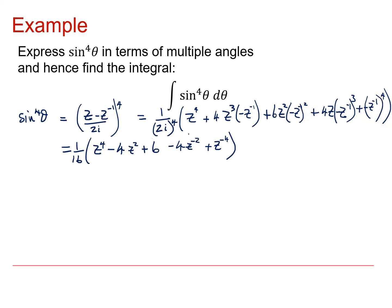And now if I just expand some of that, I'm going to get equals 1 over 16 times z to the 4 minus 4z squared. Plus 6 minus 4z to the minus 2 plus z to the minus 2 plus z to the minus 4. And rewriting these, putting the powers of 4 and powers of 2 together. I'm going to get that is 1 over 16 times z to the 4 plus z to the minus 4. Minus 4 lots of z squared plus z to the minus 2 plus 6.